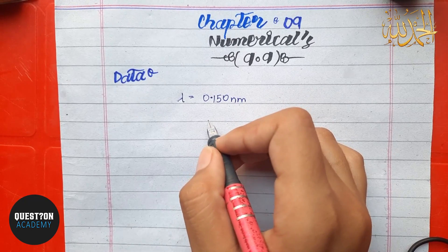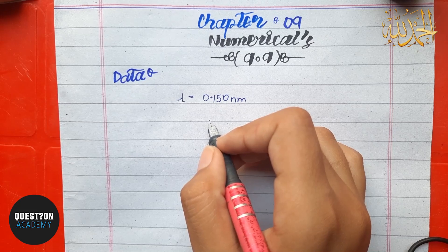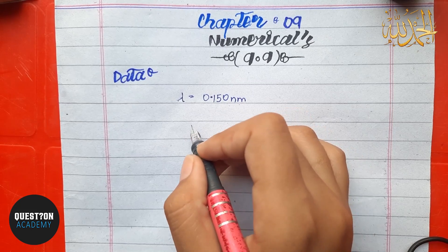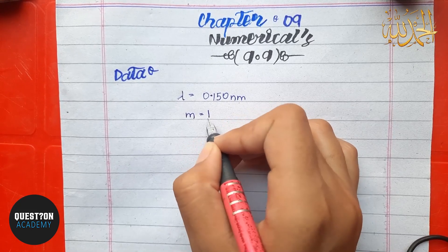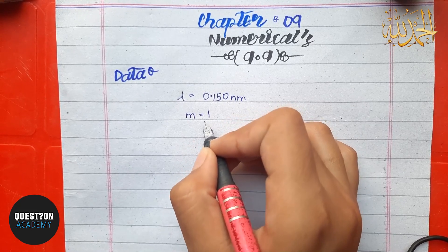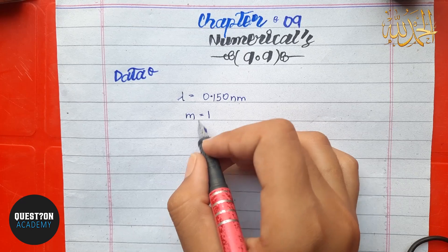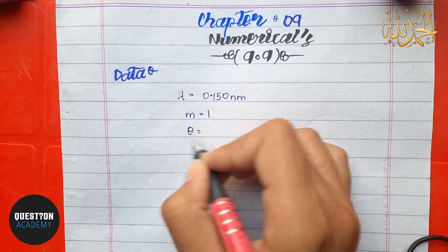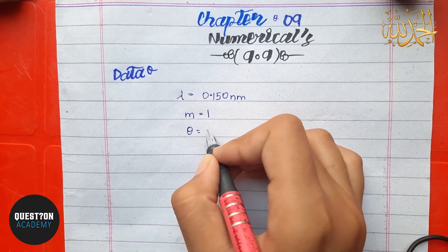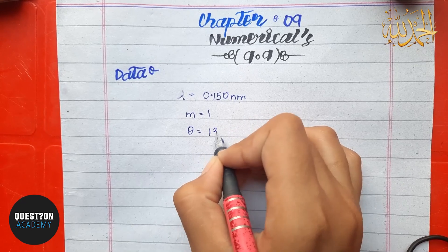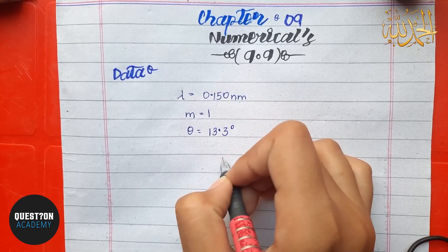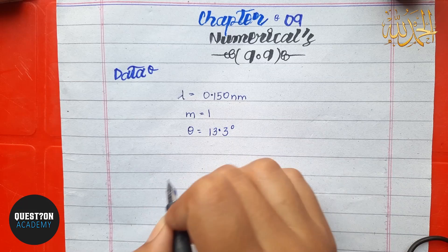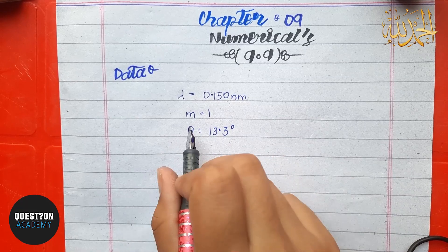They have told us that this is a first order reflection, so here n is equal to 1. And the Bragg's angle theta is equal to 13.3 degrees.